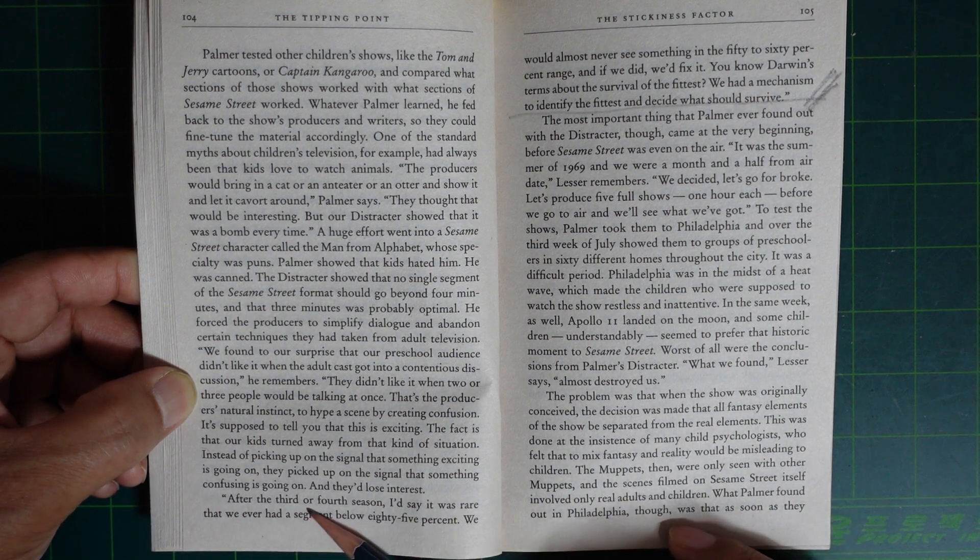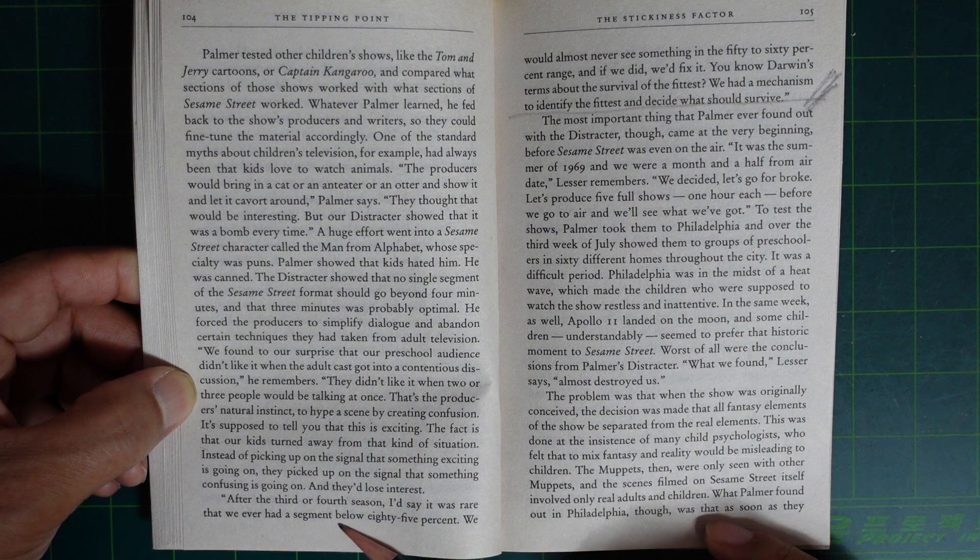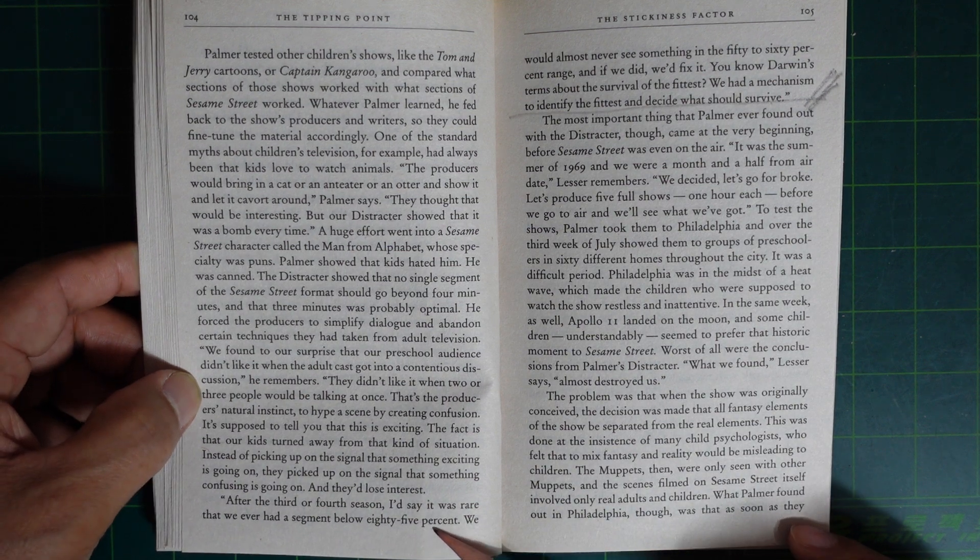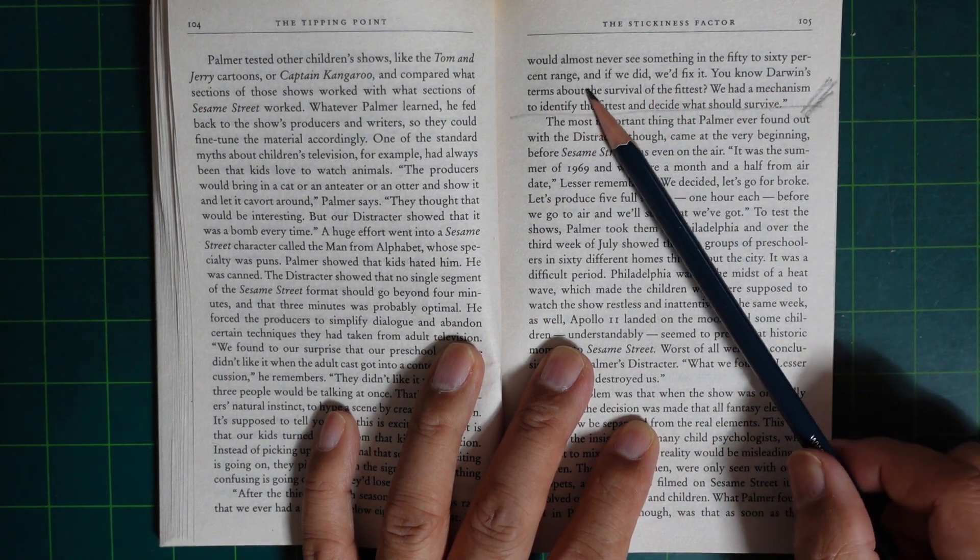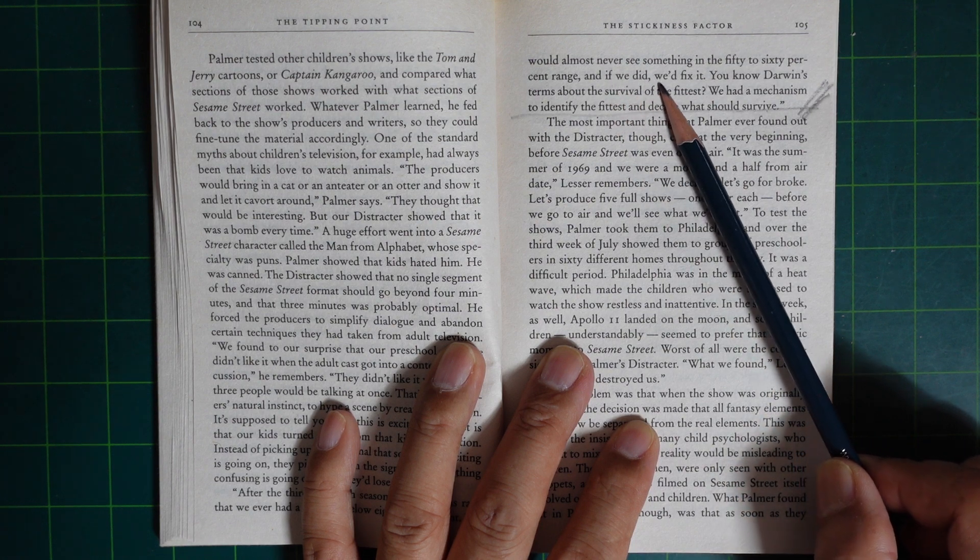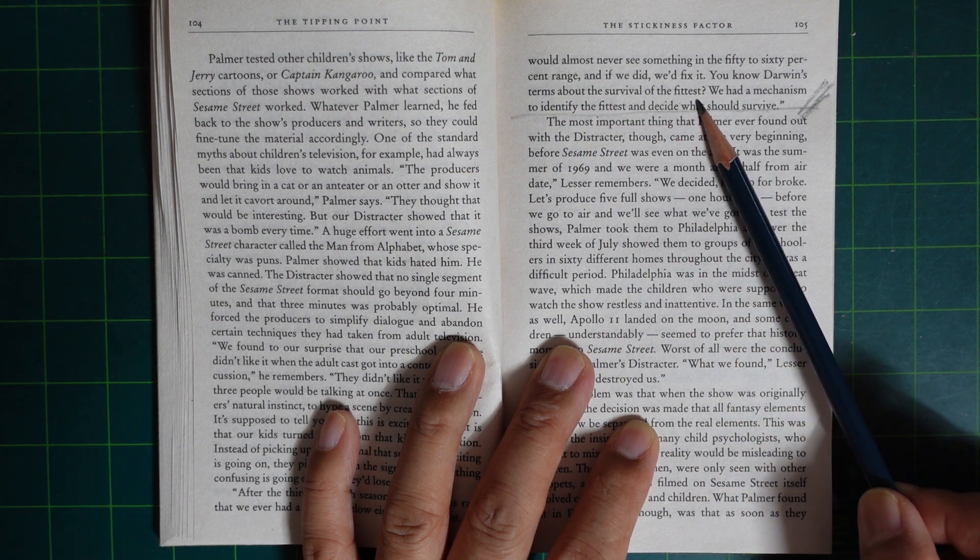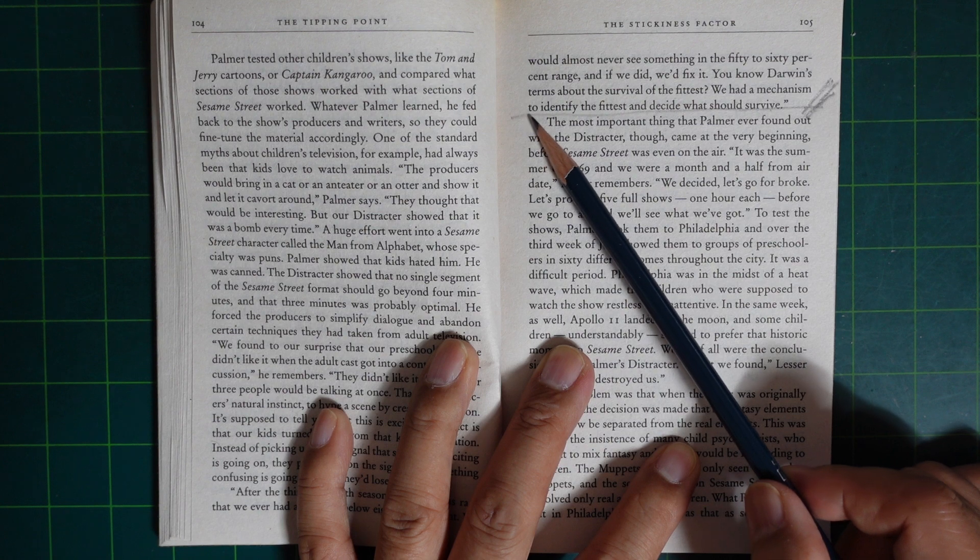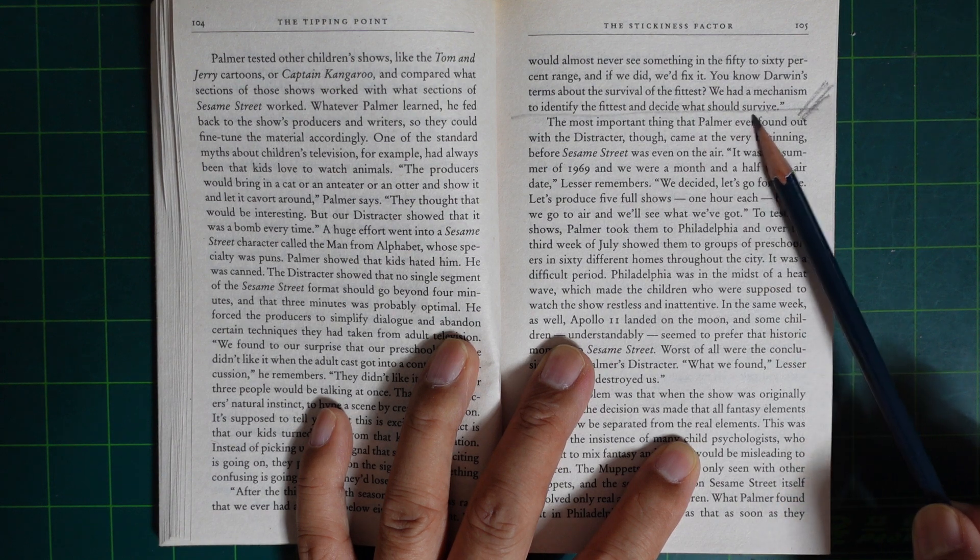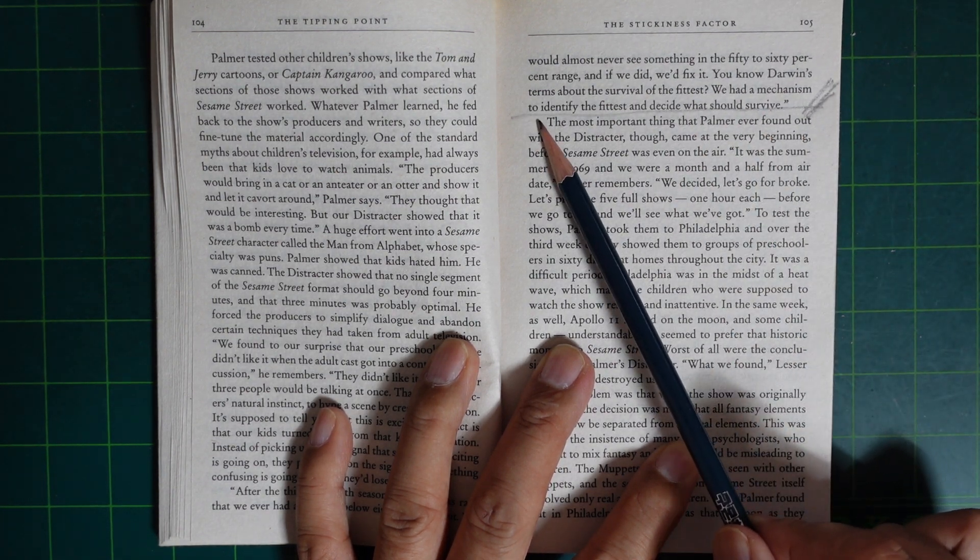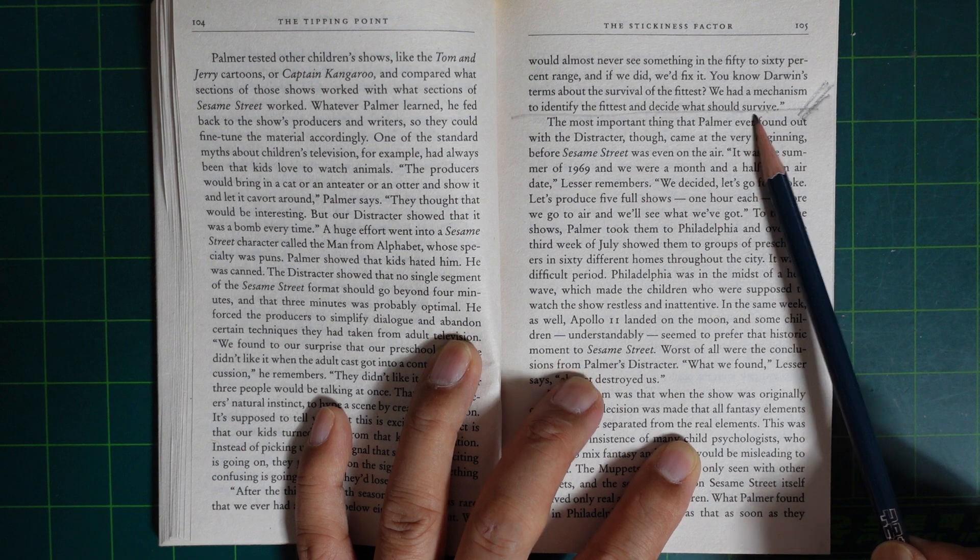'After the third or fourth season, I'd say it was rare that we ever had a segment below 85%. We would almost never see something in the 50% to 60% range, and we would fix it. You know, Darwin's theory about survival of the fittest - we had a mechanism to identify the fitness and decide what should survive.'